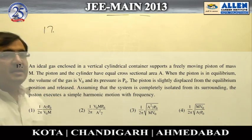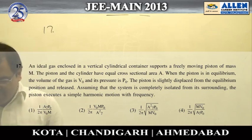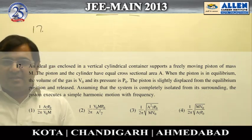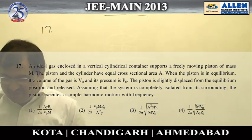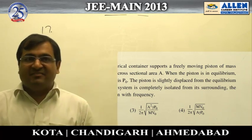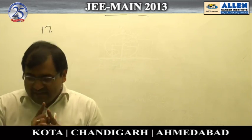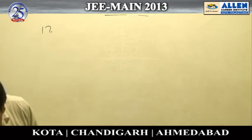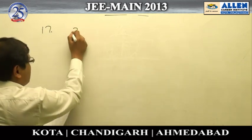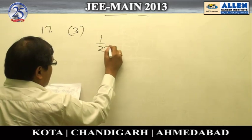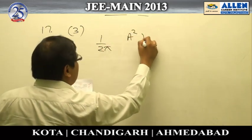Question number 17: if we solve this by the normal method, calculating the given scenario will take quite a lot of time. But if we look at the options, we find that only one option has the correct dimensions of the required quantity — that is, frequency. Doing dimensional analysis, we find that option 3 is correct: 1 by 2π times a² times γ times p-naught.